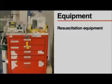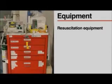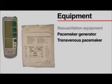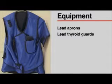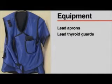Because arrhythmias may occur during placement of a pulmonary artery catheter, you should have resuscitation equipment on hand. If placing a catheter in a patient with left bundle branch block, be prepared to place a transvenous pacemaker in case complete heart block occurs. If using fluoroscopy, you will need lead aprons and thyroid guards for everyone in the room, with selective shielding for the patient that does not cover the chest or interfere with sheath insertion.